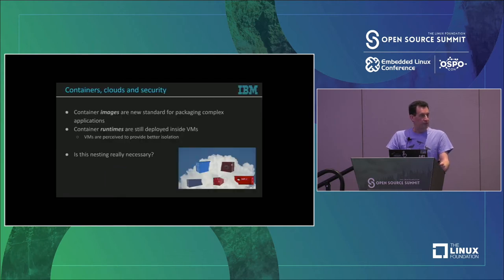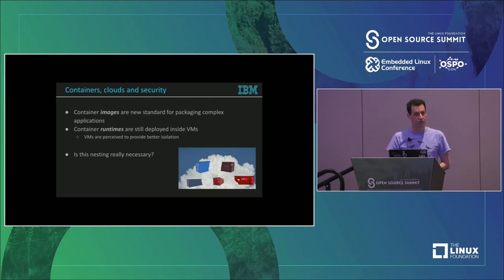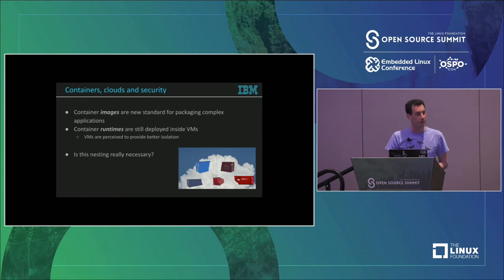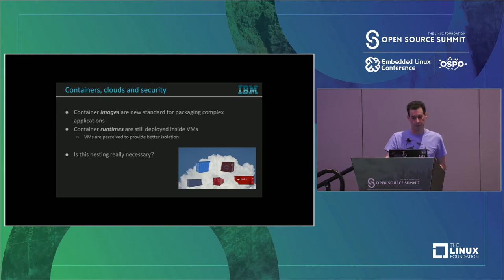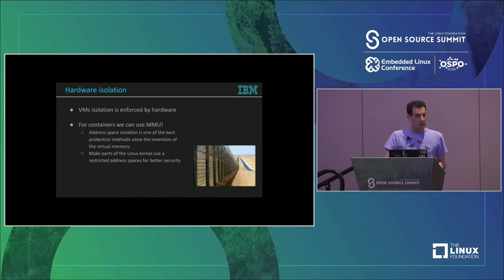Container images are now the standard way to deploy applications in the cloud and on-prem data centers. Docker image is the most convenient form of distribution of complex applications, and yet container runtimes do not usually run natively on bare metal machines. People run container runtimes inside virtual machines because VMs are perceived as more secure and as providing better isolation than containers.